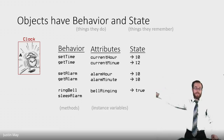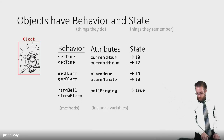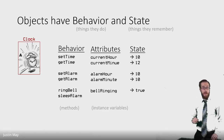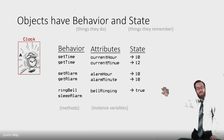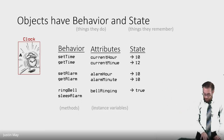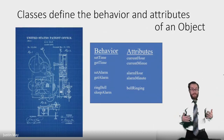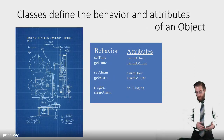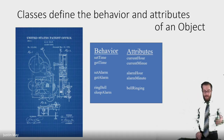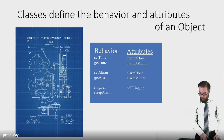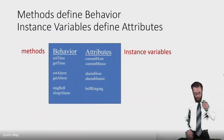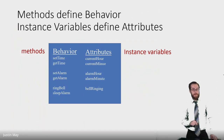Every clock is going to have the same behavior and attributes, but each instance of the clock will have different values for its state. When we write a class we are defining the behavior and the attributes of a type of object, and when you instantiate that object it will create an object with this behavior and attributes. In your code, behavior is represented by methods and attributes are represented by instance variables.